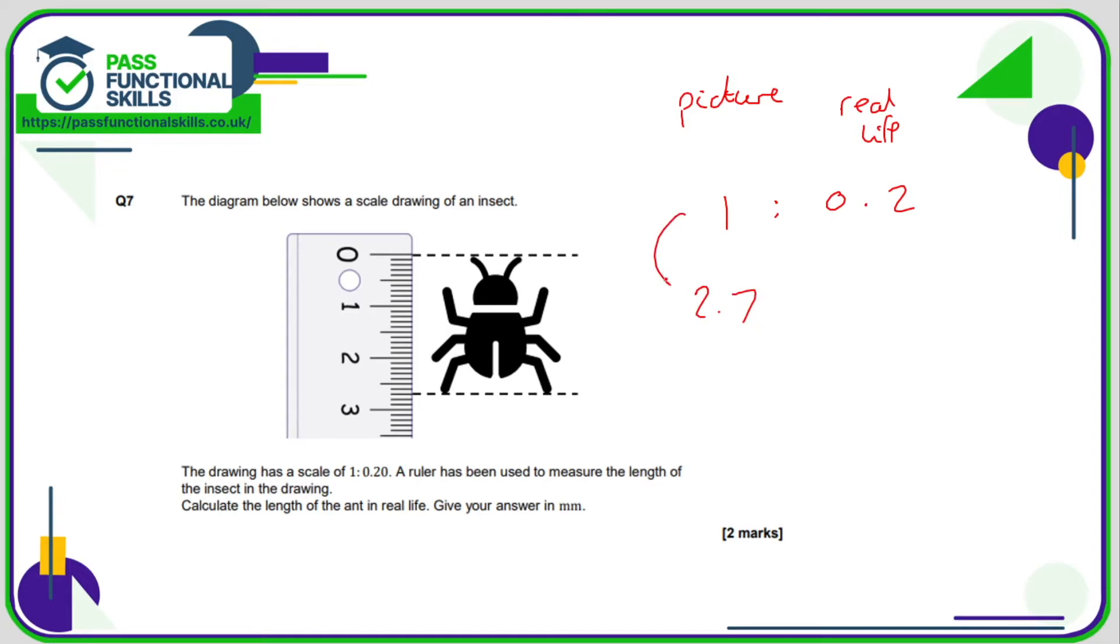To go from 1 to 2.7, we're multiplying by 2.7. So we therefore need to multiply the 0.2 by 2.7. And 0.2 times 2.7 is 0.54. So 2.7 centimeters on the picture represents 0.54 centimeters in real life.